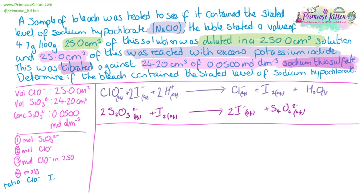Because the chlorate will react to form iodine, and the iodine reacts with the thiosulfate. Starting with just one mole of our chlorate — that is going to react to end up with one mole of iodine. And then our one mole of iodine is going to react with two moles of thiosulfate. So we're not actually interested in the moles of iodine; that's just something to help us get the actual answer. What we need to know is that one mole of chlorate will react with two moles of thiosulfate.